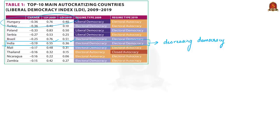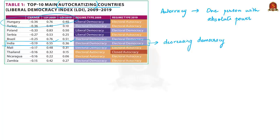India is among the top 10 main autocratizing countries in the last decade. Autocracy means a system of government by one person with absolute power — dictatorship or tyranny — reflecting the lack of democracy. According to VDEM, autocratization is the substantial decline in its Liberal Democracy Index, since the index captures many indicators reflecting democracy in a country.